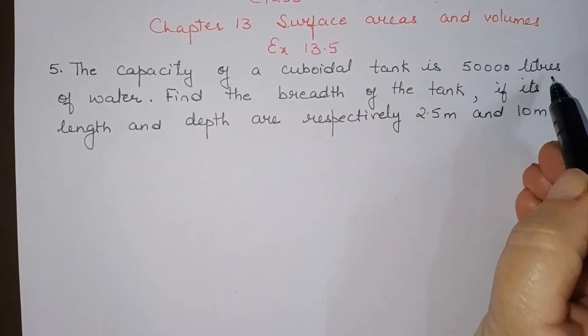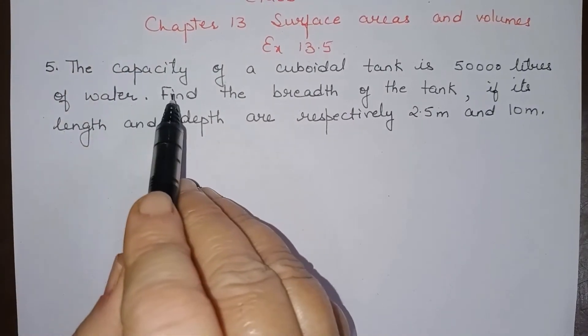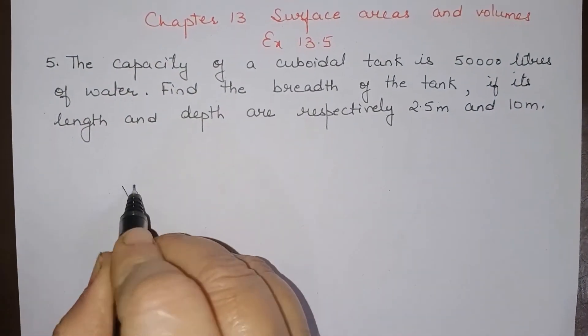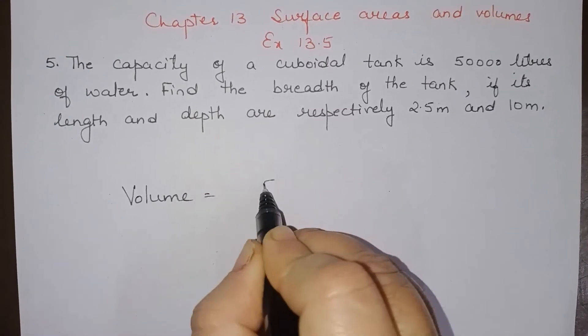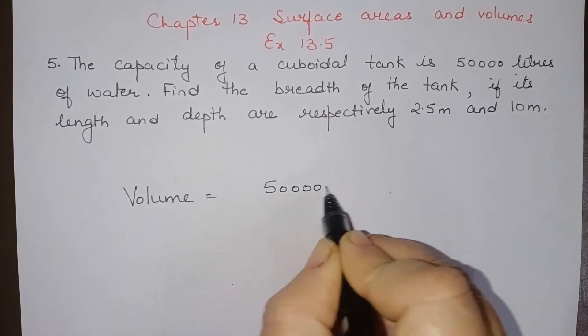Now, this 50,000 litres means it is the given capacity or volume. Volume is given to be 50,000 litres.